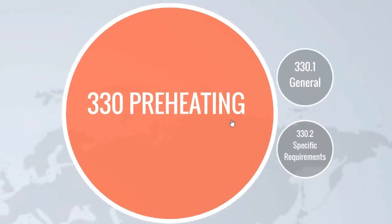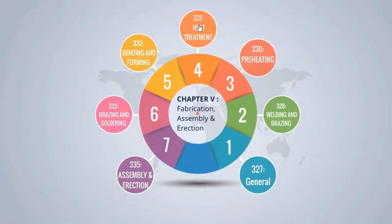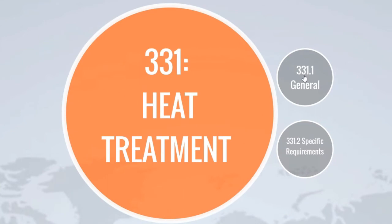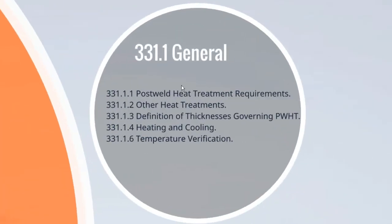The paragraph on preheating is followed by para 331, titled Heat Treatment. First subpara 331.1 lists general requirements in five subsections: 331.1.1 Post-Weld Heat Treatment Requirements, 331.1.2 Other Heat Treatments, 331.1.3 Definition of Thickness Governing PWHT, 331.1.4 Heating and Cooling, and 331.1.6 Temperature Verification. Note that subsection 331.1.5 does not exist in subpara 331.1.